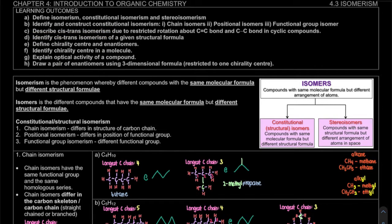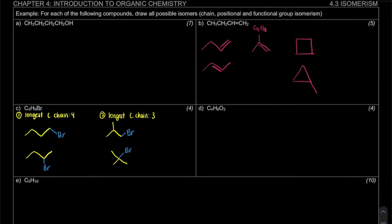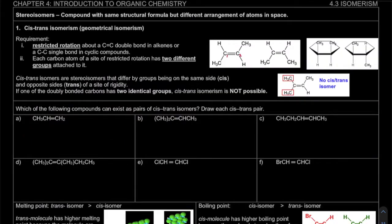Previously we have learned about isomers, where we mostly looked at the case of structural isomers. In this video, we're going to look at the stereoisomer. Stereoisomers are compounds that have the same structural formula but a different arrangement of atoms in space.